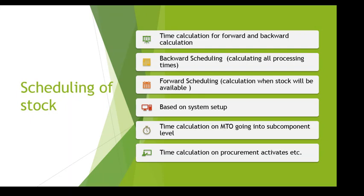When somebody places an order, SAP uses either backward scheduling or forward scheduling. Backward scheduling calculates all processing times — for example, picking, packing, warehouse time, transfer order time, and shipping time from point A to point B. Based on the customer's requested date, the final confirmation date is populated into the order. When stock is not available, the system calculates when it will be received from procurement, and from that point when it can be shipped to the customer.